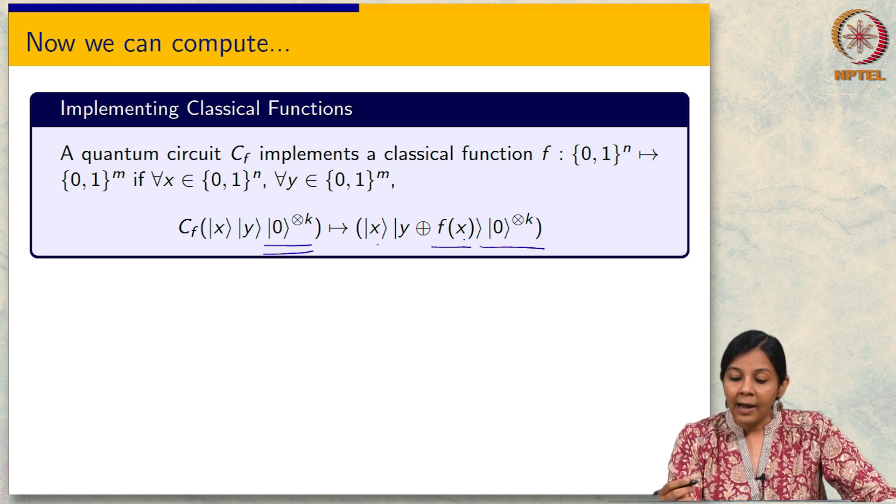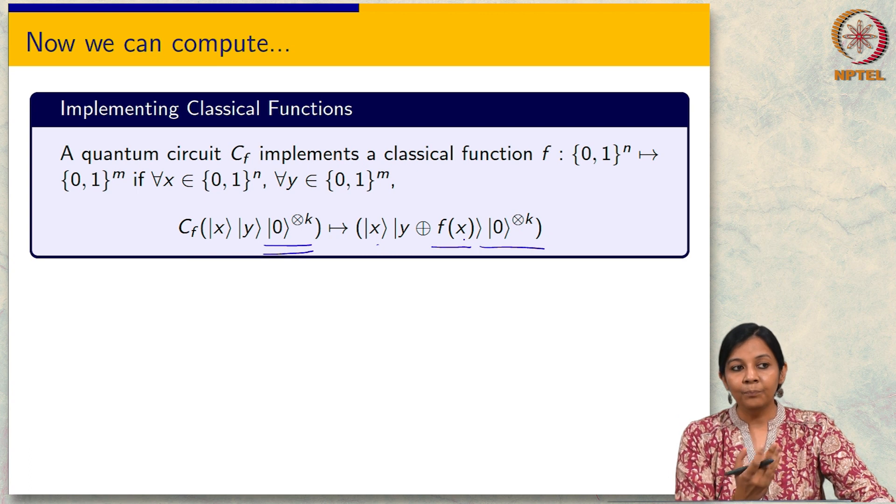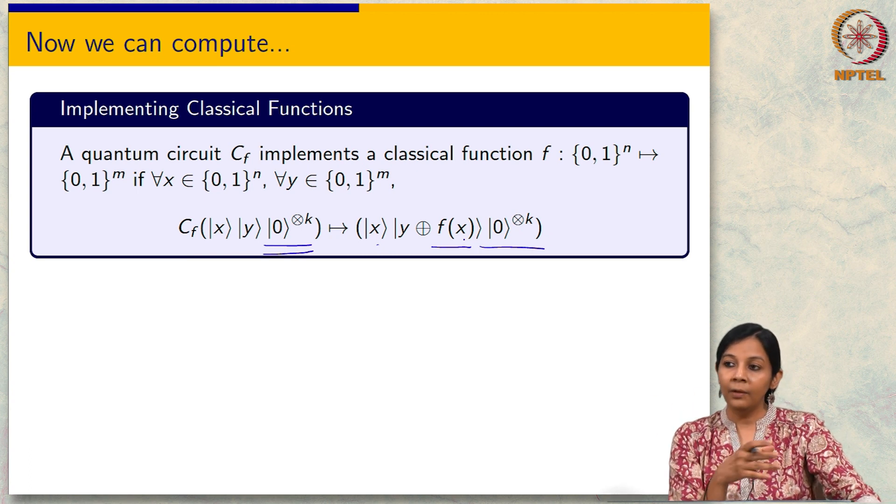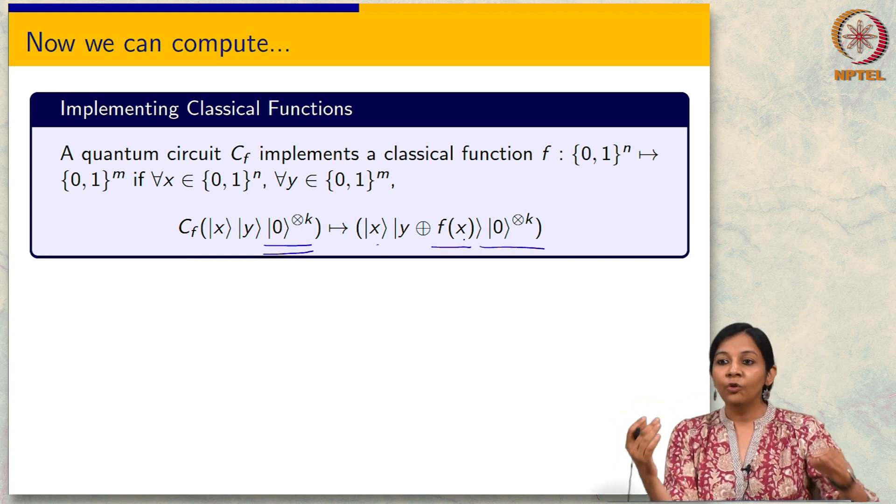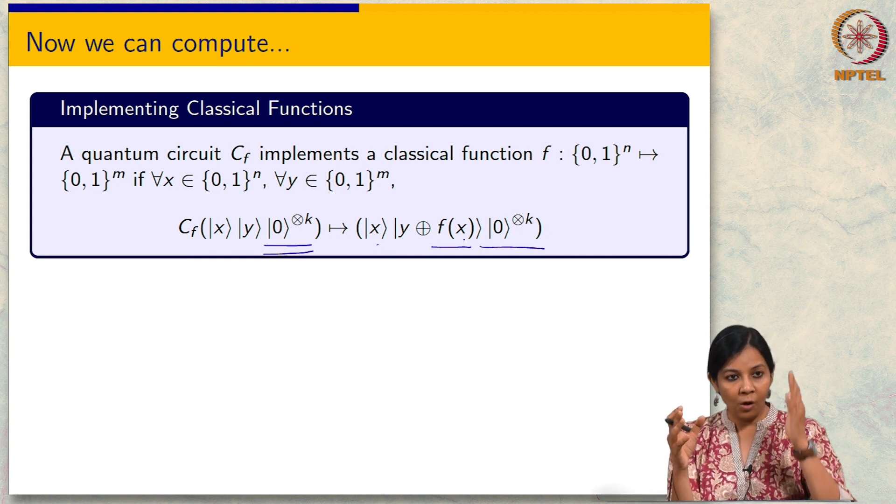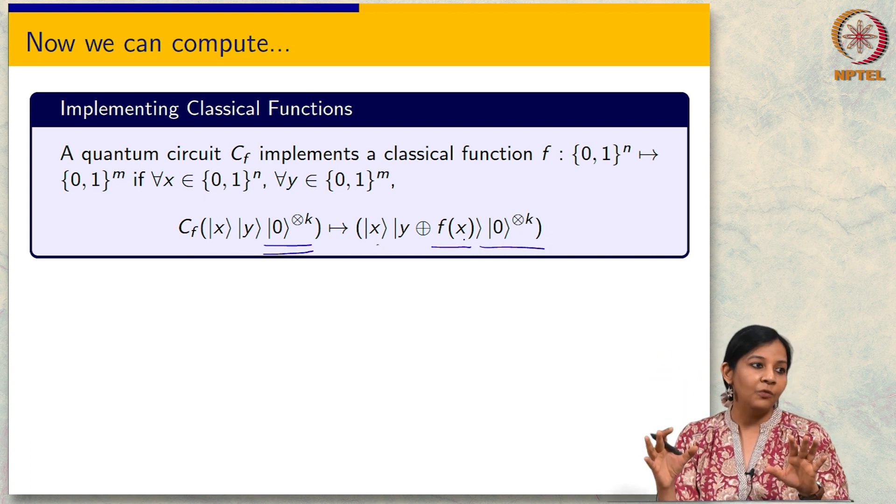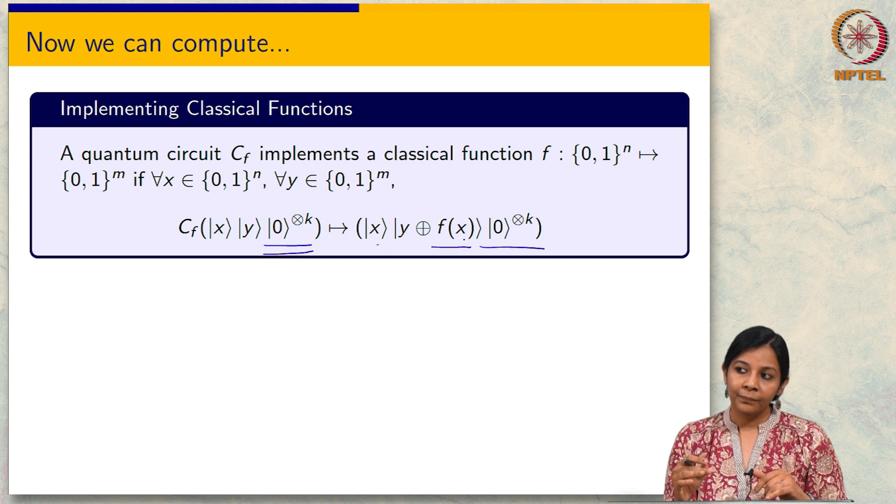What we talked about is that these ancillary bits of all 0's at the start of the computation they are fresh. Now, after the computation they could be arbitrarily entangled with the input and the output, but I do not want to think about them because my goal here is simply to compute f(x). So, what I will do is simply uncompute the circuit on the ancillary bits to recover the all 0's.